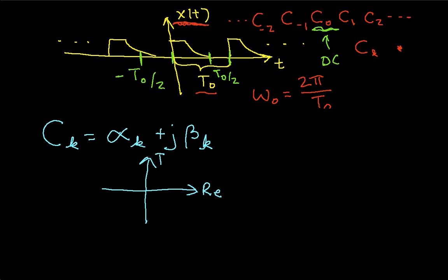If I graph this on a complex plane, I might have the point here where this is alpha k plus j beta k. I can also represent this in terms of a magnitude, which we typically just put vertical bars by c sub k, and an angle, which we typically represent by this angle sign. So if I draw this, then the magnitude is the length of the segment between c sub k and the origin.